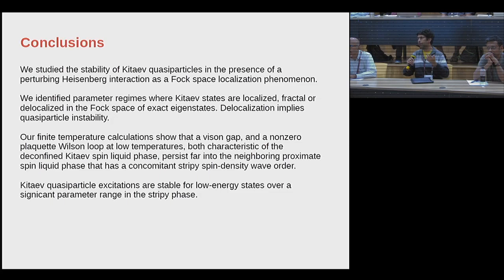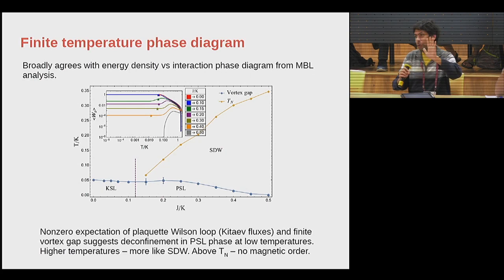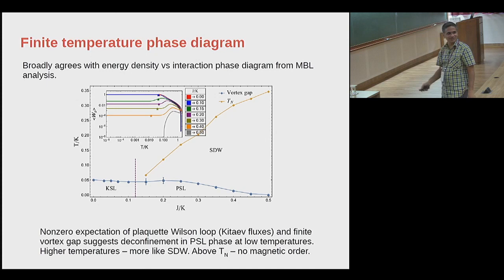A basic question: we know that we are in two dimensions and there is no deconfinement at finite temperature. So how can it be that... numerically in small systems, yes. The point is I'm just tracking this characteristic energy scale that is the vison gap — that's the only meaning of deconfinement. Strictly speaking, it's t equals zero.